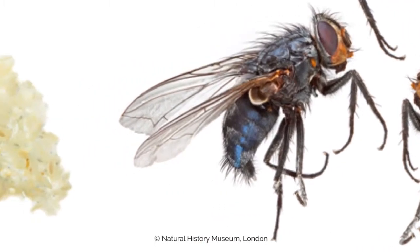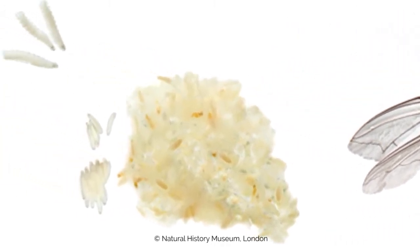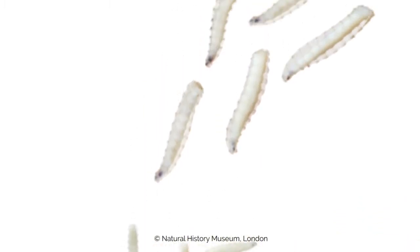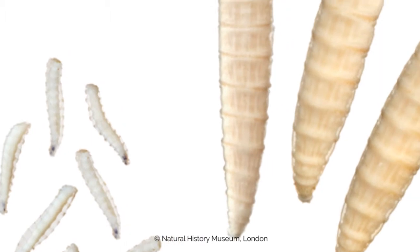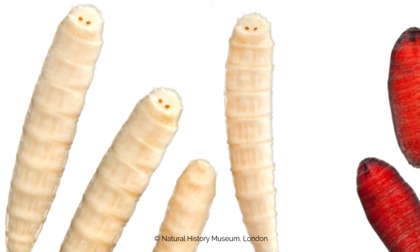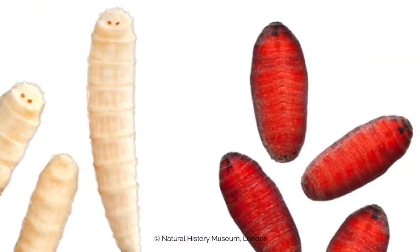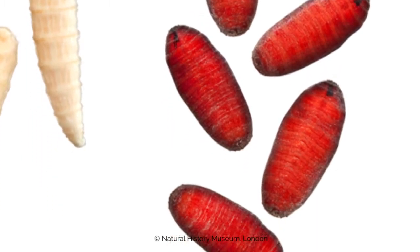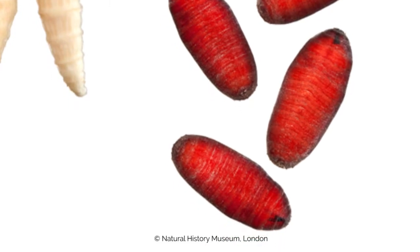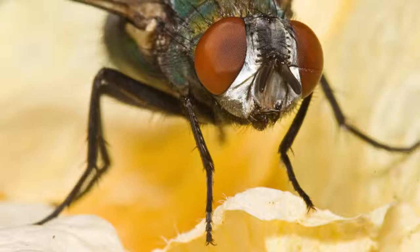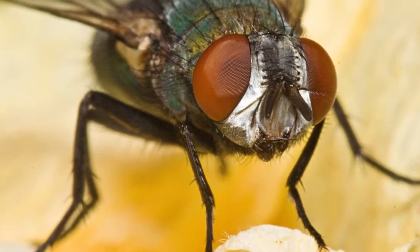Blowflies are holometabolous insects. This means the female lays her eggs on the body, which then hatch out into first instar larvae, or maggots. They then go through one moult into second instar maggots, then through a second moult into third instar, and these continue to feed on the body. When they reach their maximum length, they move off the body to pupate. The outside of the larva shrinks, constricts, and hardens to become the pupal case, and inside, the larva breaks down and reforms itself as an adult fly, then emerges from the pupal case.